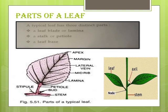Veinlets: the veins again divide and subdivide — they profusely branch to form a network of veinlets, which keep the leaf in expanded form, otherwise the leaf would roll. They also help in conduction of food, water and minerals. The midrib branches into lateral veins, and the lateral veins again branch into veinlets. These veinlets help keep the leaf fully flat so it can absorb more sunlight, and they also help in conduction of food, water and minerals — distributing food prepared by the leaf to all parts of the plant.